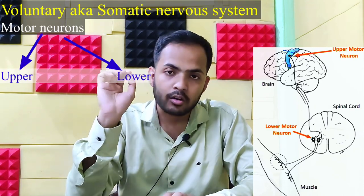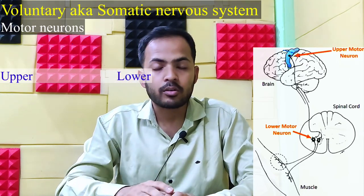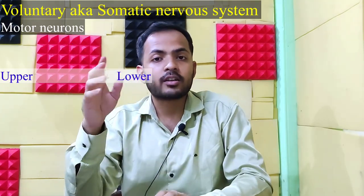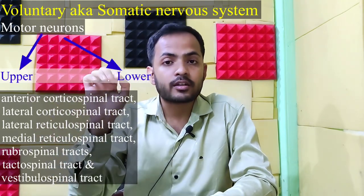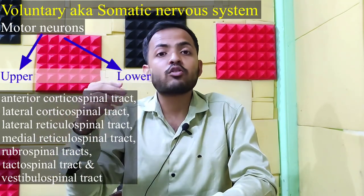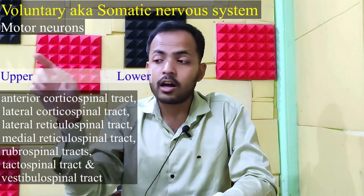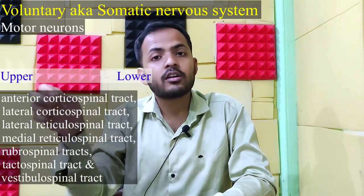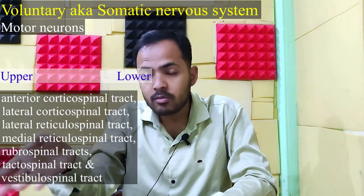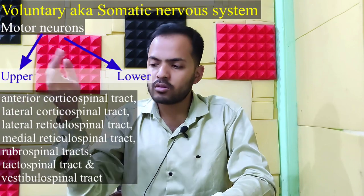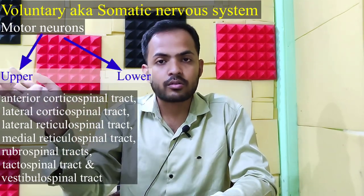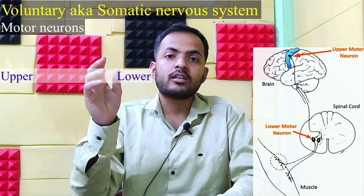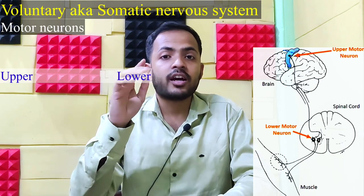In the spinal cord, specifically in the anterior or ventral part, there are many tracts that come under the upper motor neuron. These are: the anterior and lateral corticospinal tracts, the lateral and medial reticulospinal tract, the rubrospinal tract, the tectospinal tract, and the vestibulospinal tract. So these all come under the upper motor neuron.